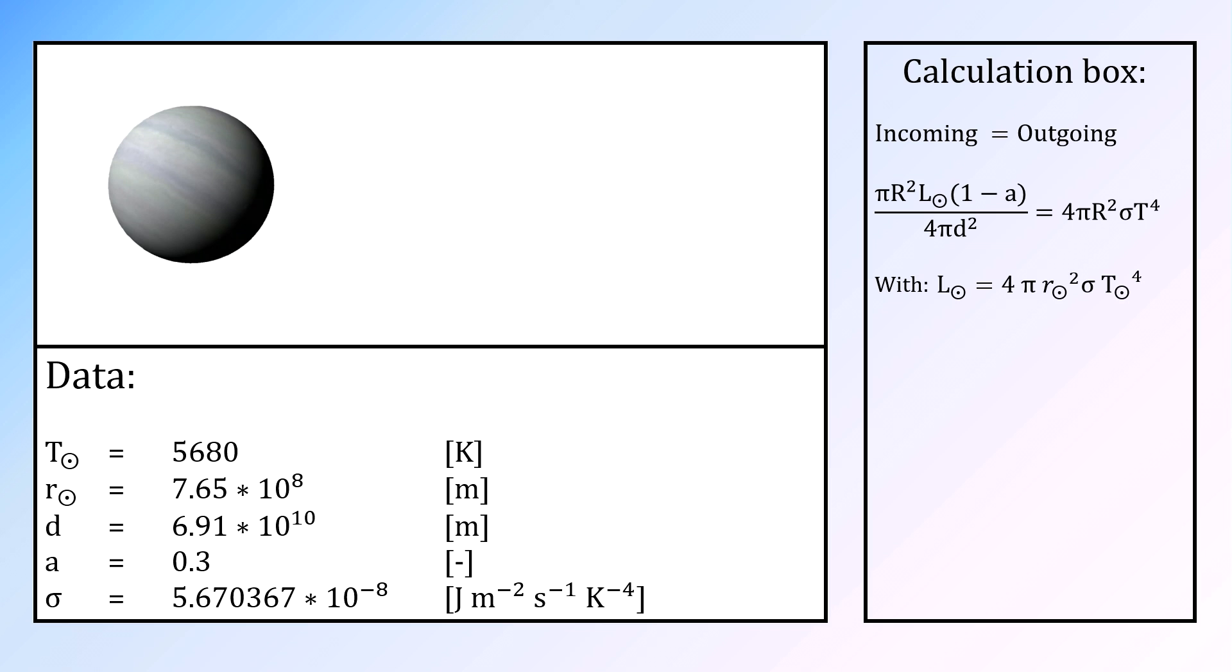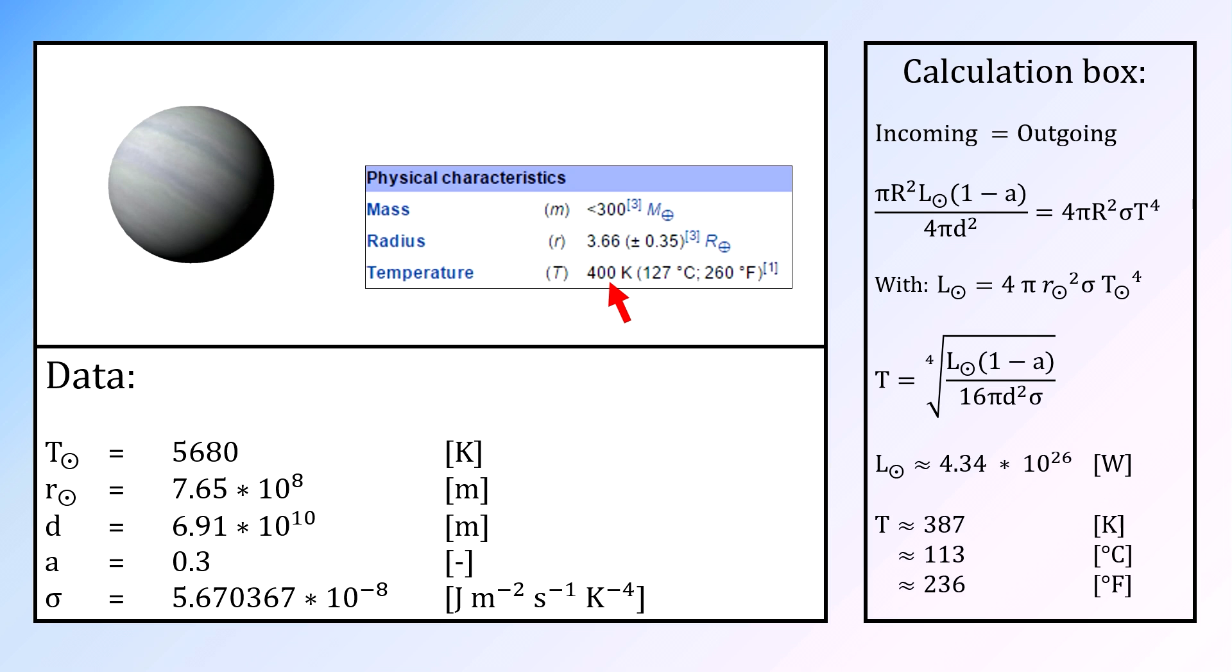We can now calculate the planetary equilibrium temperature of Kepler-11g, a temperature of 387 degrees Kelvin, a value really close to an uncited temperature on Wikipedia.